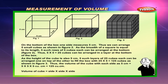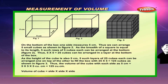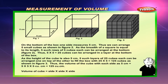As the height of the cube is also five centimetres, five such layers of twenty-five cubes each can be arranged one on top of the other to fill the box with twenty-five into five, which equals one hundred and twenty-five cubes, as shown in figure 3. Thus, the volume of the cube with each side as five centimetres is equal to five into five into five cubic centimetres, which equals one hundred and twenty-five cubic centimetres.